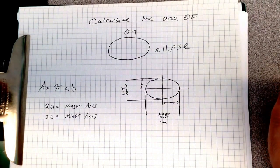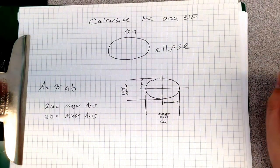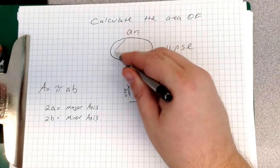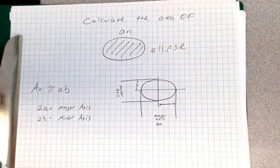And today we are going to work on calculating the area of an ellipse. This is an ellipse right here, and we have to figure out the area.